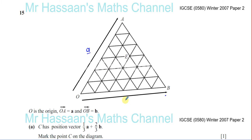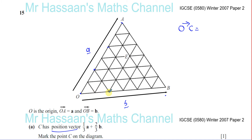C has a position vector ⅓**a** + ⅔**b**. The position vector of a point means the vector from O to that point, so we need to get from O to C. Starting at O, go one third of **a** — **a** is split into six parts, so one third is two parts along. Then go two thirds of **b** — **b** is also split into six sections, so two thirds is four sections. That gives us point C marked in the diagram.